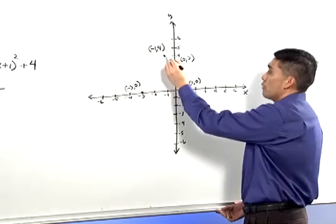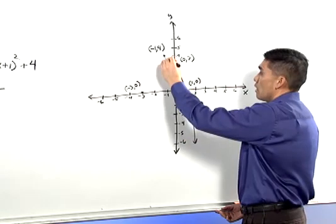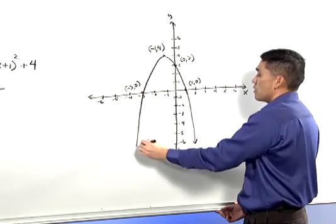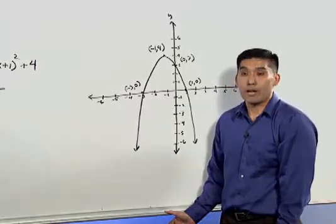We know it's a parabola opening downward. And so our graph takes this U-shape pointing downward.